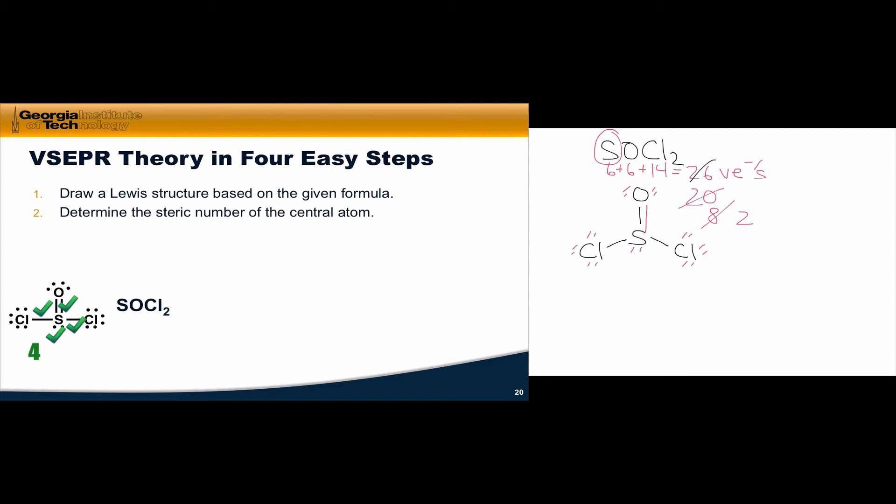The next step is to determine the steric number of the central atom. This is as simple as counting the number of electron groups around the central atom. Don't forget about lone pairs. The sulfur has a lone pair, and so it has a total of four electron groups in SOCl2. It's easy to forget that the lone pair is there, and count only three valence electron groups in this structure.